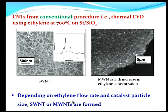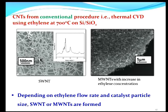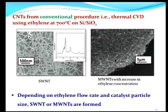Depending on the flow rate of ethylene in the CVD process and the catalyst particle size employed, it is possible to obtain either single-walled or multi-walled nanotubes — so it is possible to control the nature of the carbon nanotubes obtained by tinkering with the process in a predictable manner. What is shown here is a forest of multi-walled carbon nanotubes obtained in the same chamber by greatly increasing the ethylene concentration.